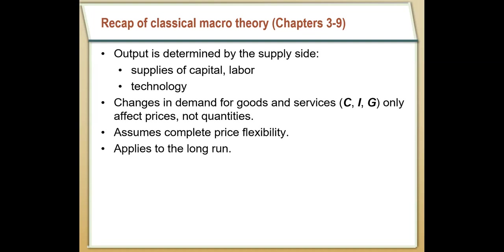The primary assumption of classical theory is that prices are completely flexible in the long run — if there's a change in total demand, a business can respond by changing its price. Over several years or several decades, this is probably a pretty good assumption. But when we look at the short run, businesses somewhat struggle to change prices fairly quickly. They're either locked into some kind of a contract or they have to face menu costs. That requires us to develop a different theory for why business cycles occur in the short run.